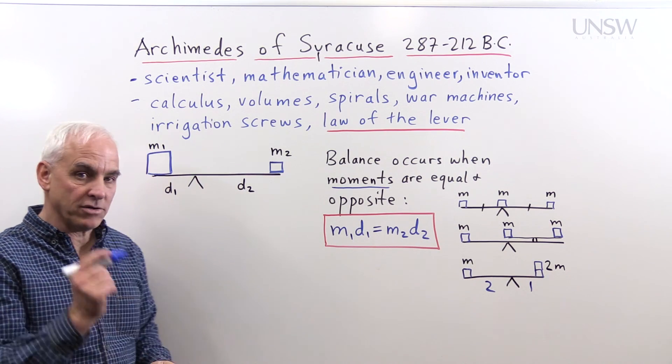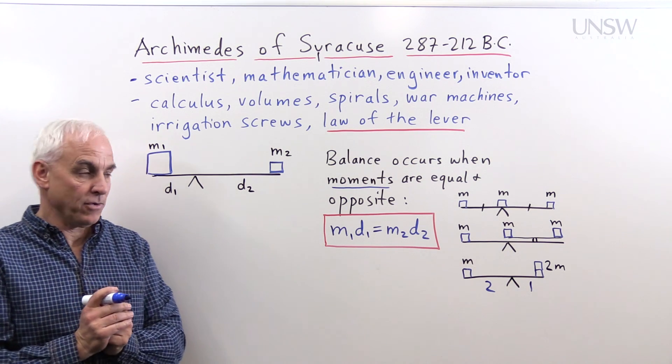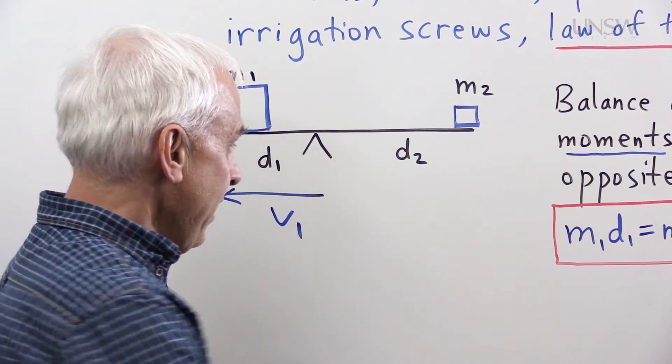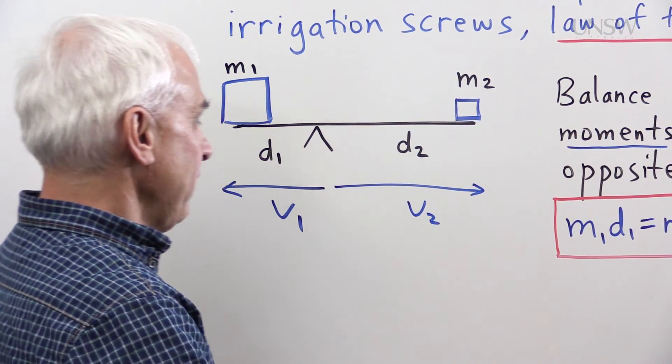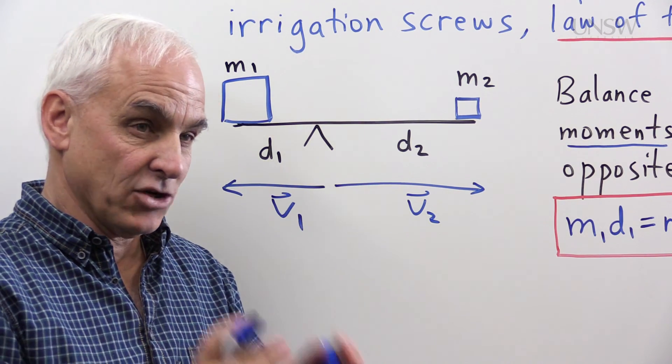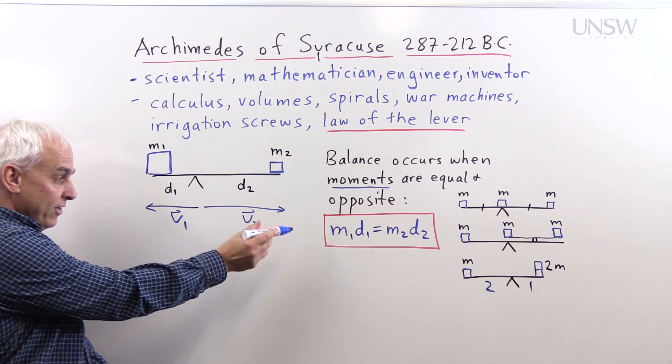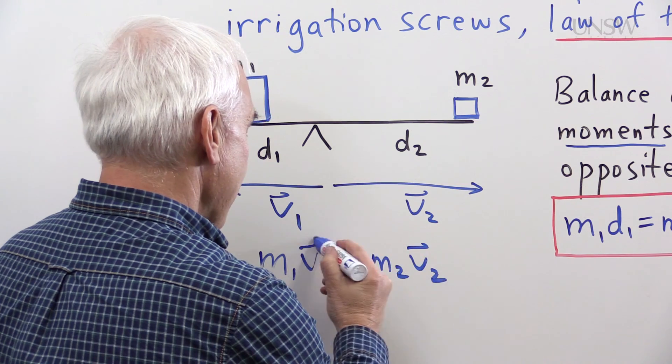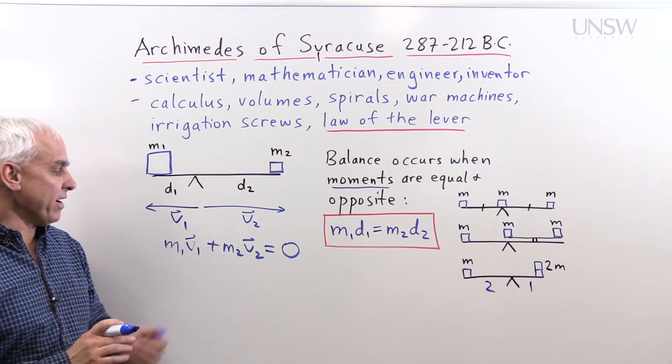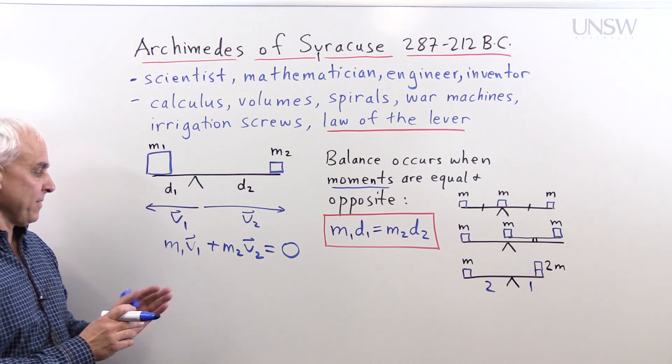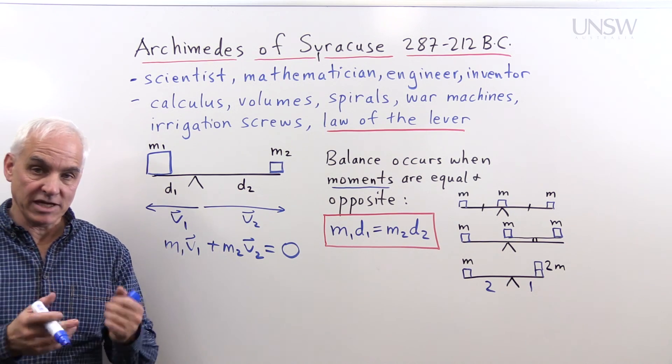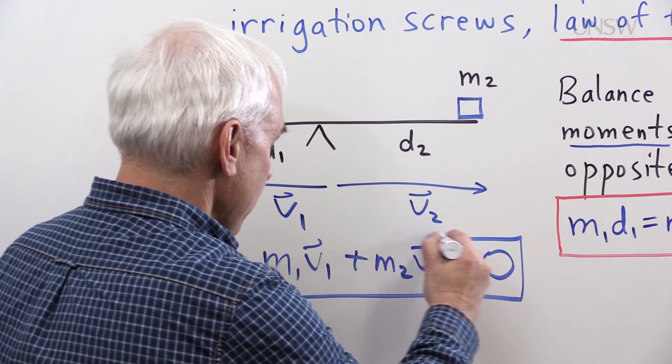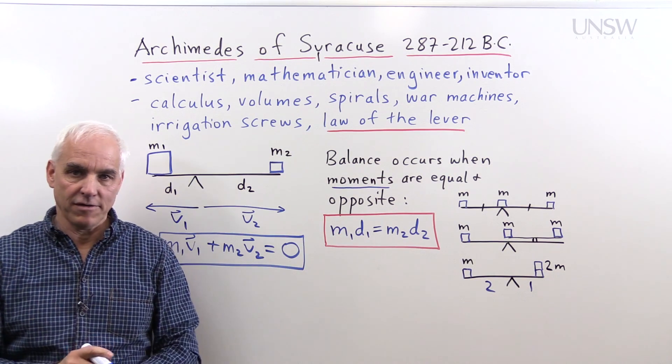Now there's another way of thinking about this that I want to tell you about, which is a vector point of view. With a vector point of view, we introduce a vector that's emanating from the fulcrum in this direction. Let's call it V1. And another vector which emanates in this direction, let's call it V2. So another way of stating this is to say that M1 times V1 plus M2 times V2 equals 0. That's the same because V1 and V2 are in different directions. So the total moment, which is the combination of masses times displacement vectors, has to equal 0 in order to have balance. This is a modern vector way of writing this ancient Greek formula found by Archimedes.